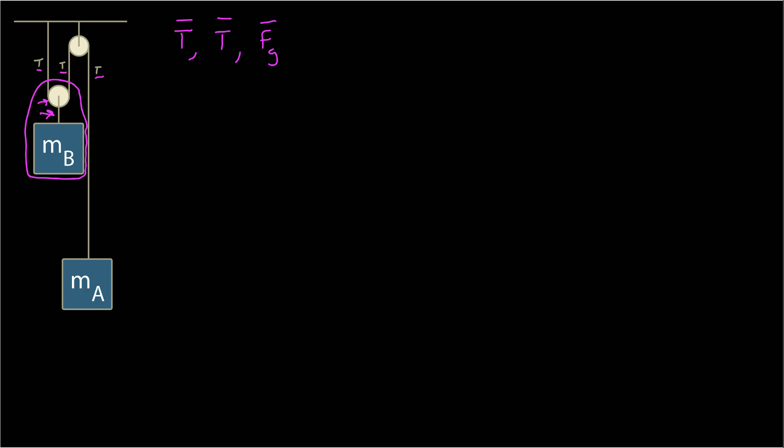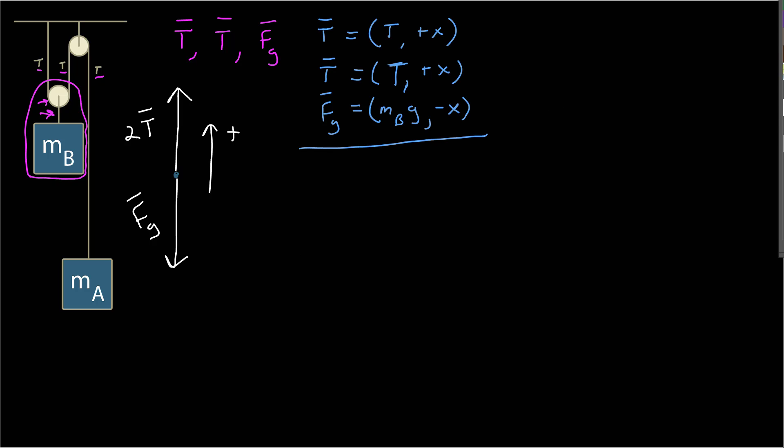Now I want to understand the forces. There are, in fact, three separate forces acting on the object: a force due to gravity, and two separate tensions. Every string that crosses the line encircling your object is a force according to our tension model, so there are two of them, each with magnitude T, and they both point up. Drawing the free body diagram, I have two tension forces both pointing up — indicated as 2T — and then the force of gravity acting down. The two tension forces each have magnitude T and point in the positive x direction, while the force of gravity equals mass B times g in the negative x direction.